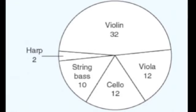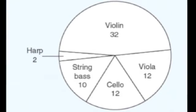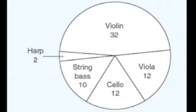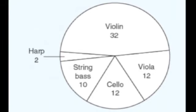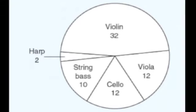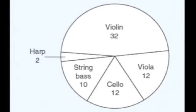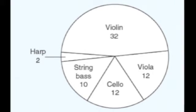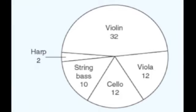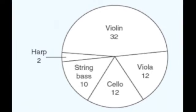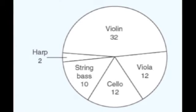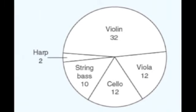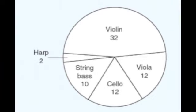Looking at this graph, I can tell that the whole orchestra is made up of 68 people by adding up all the sections of the circle graph. Almost half of the orchestra is violin players because that section takes up almost half the circle. The harp is the smallest section, and the cello and viola have equal numbers of players. Pause and get some conclusions written down in your notes.